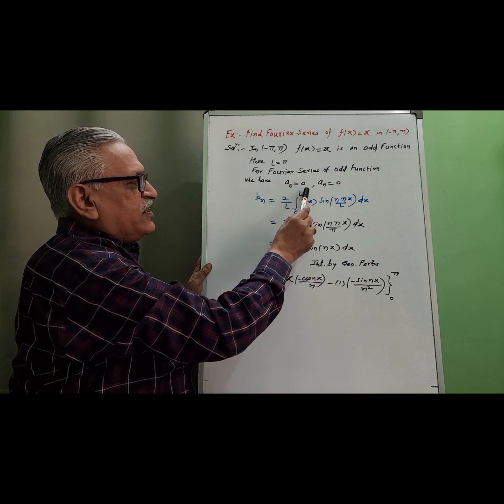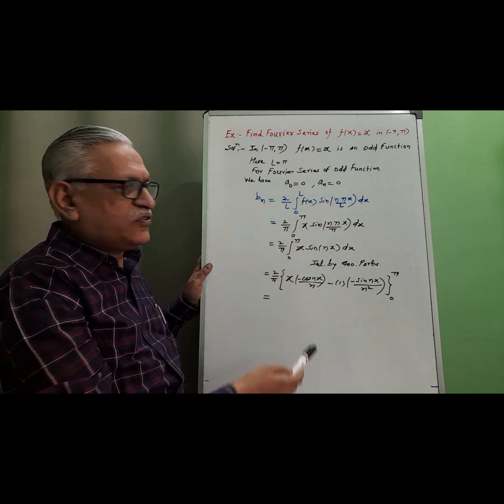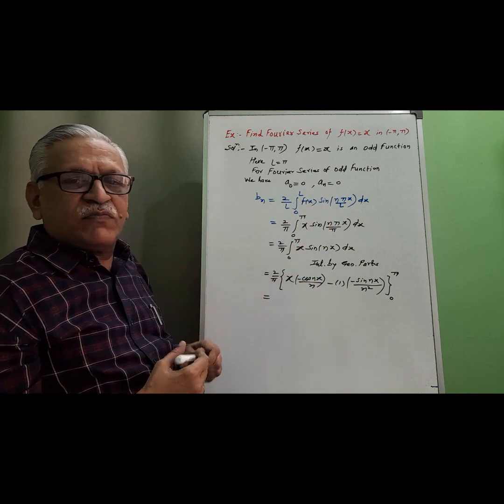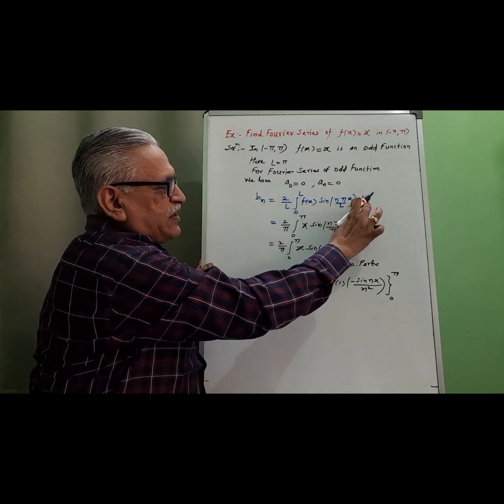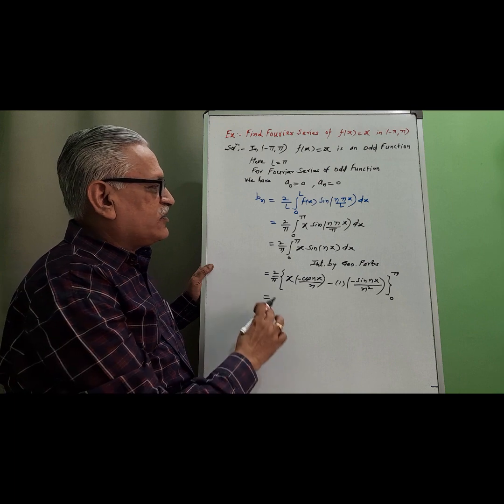Therefore, we have a₀ = 0, aₙ = 0, and bₙ is given by 2/l, integration from 0 to l, f(x) sin(nπx/l) dx.